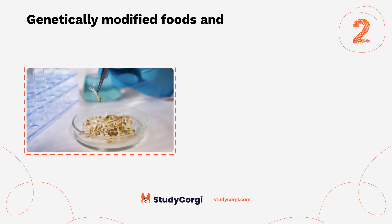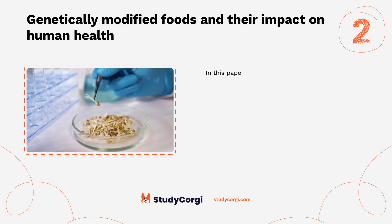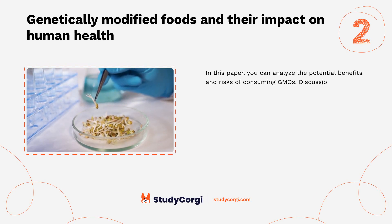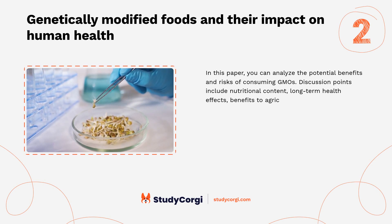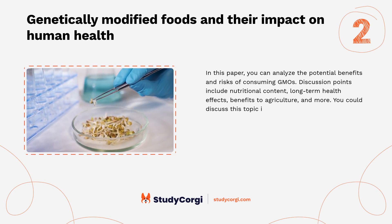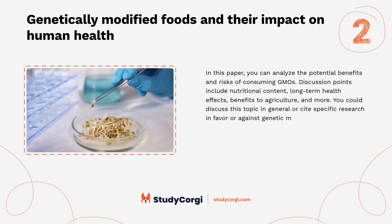Genetically modified foods and their impact on human health: in this paper you can analyze the potential benefits and risks of consuming GMOs. Discussion points include nutritional content, long-term health effects, benefits to agriculture, and more. You could discuss this topic in general or cite specific research in favor or against genetic modification.